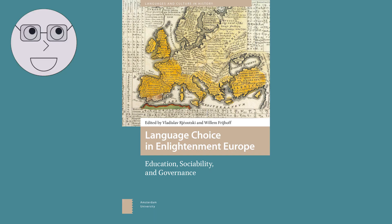One of the key factors that led to the French Revolution was the Enlightenment. This was a period of intellectual and cultural growth that swept across Europe in the 18th century. It was a time when people began to question traditional beliefs and values and to explore new ideas about politics, science and society.